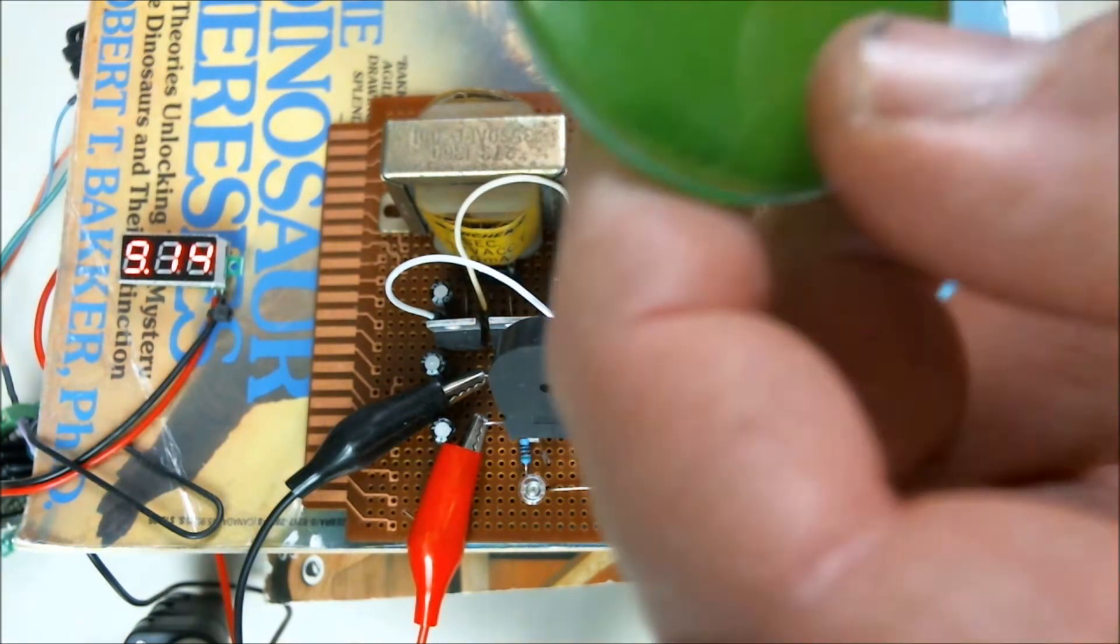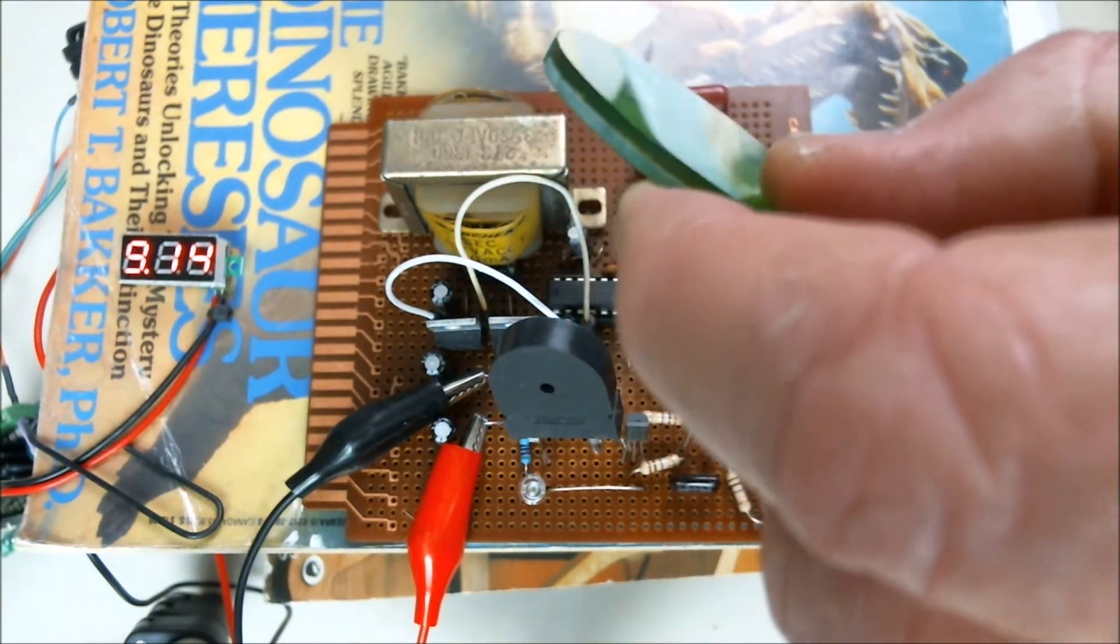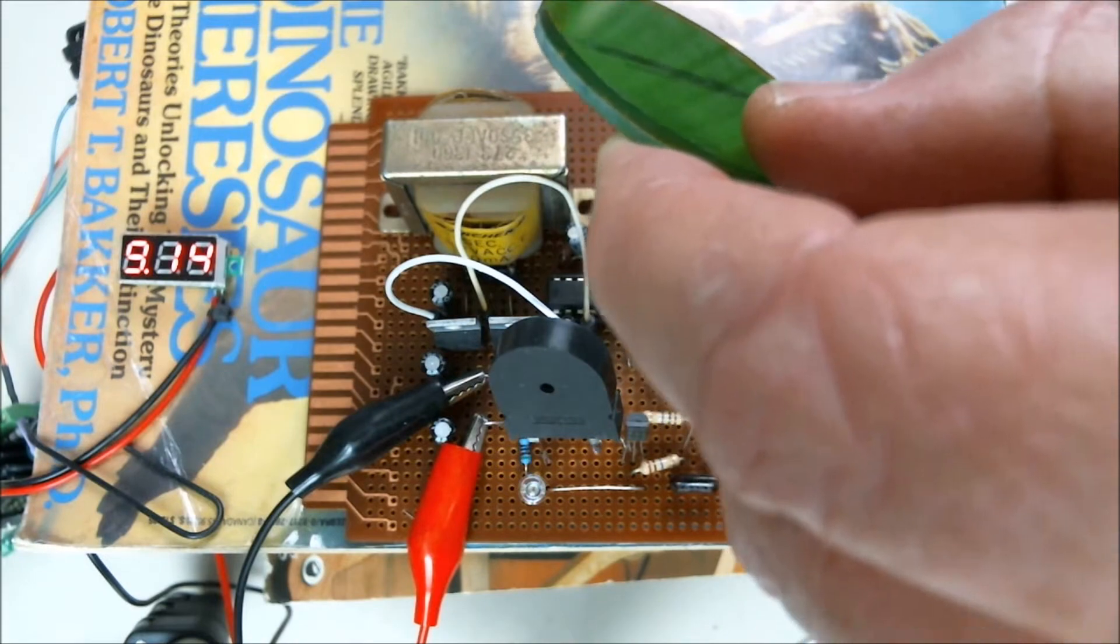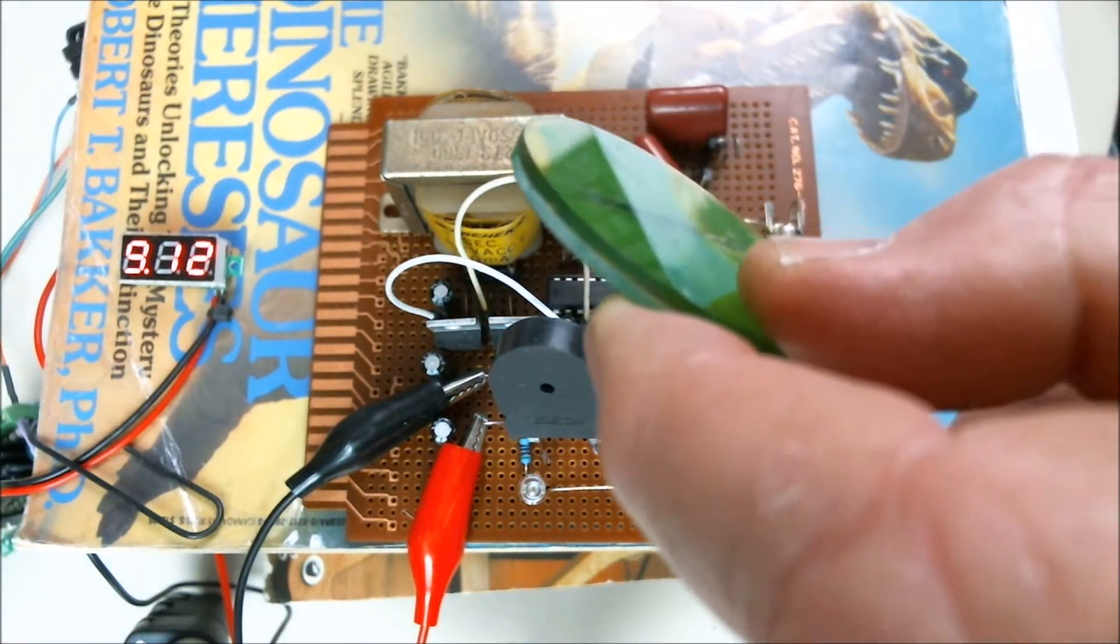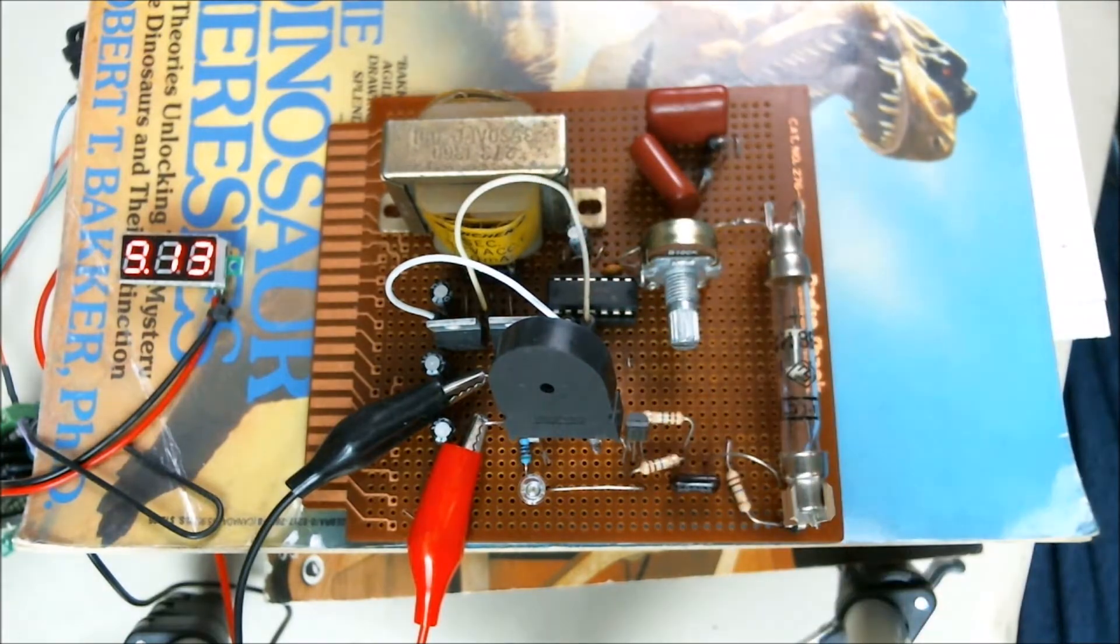And this is a piece of radioactive glass. It's a lens loaded with thorium. It's producing alpha, beta, and gamma emissions. Place it near the tube.